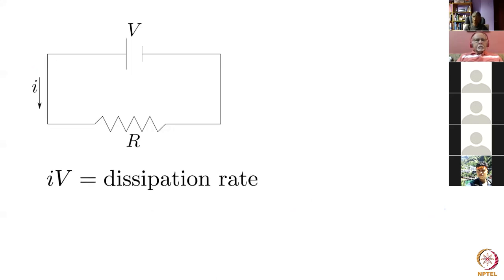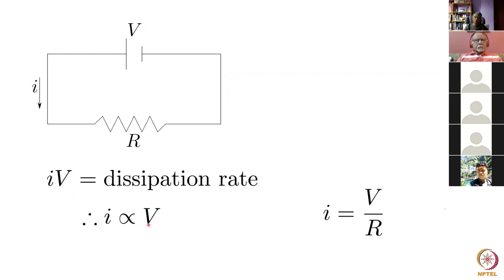Here is the Ohm's law representation: we have a potential difference given by a battery, a current flowing, and a resistor which resists the flow. If I multiply the current by the voltage I get a free energy dissipation rate. Therefore the current is proportional to the potential difference V, giving us Ohm's law with 1/R as the proportionality constant. This satisfies what we said: if I express the energy dissipation rate as a product of a force and a flux, the flux is proportional to the force.